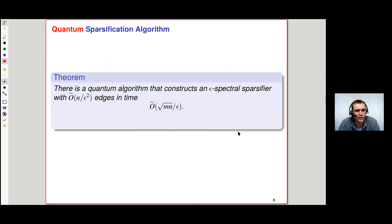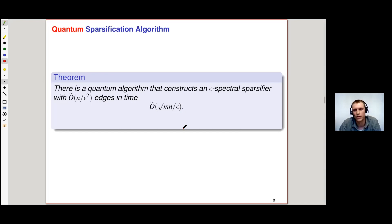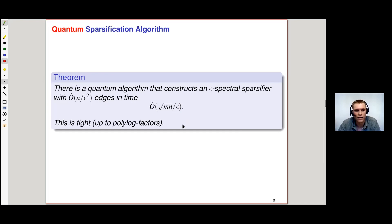This proves the following theorem: there is a quantum algorithm that explicitly constructs an epsilon spectral sparsifier with O-tilde(n/ε²) edges in time O-tilde(√(mn)/ε). This is a quantum speedup over the classical runtime. This bound holds for both time and query complexity, and we prove that even just in terms of query complexity, it is tight up to polylog factors.